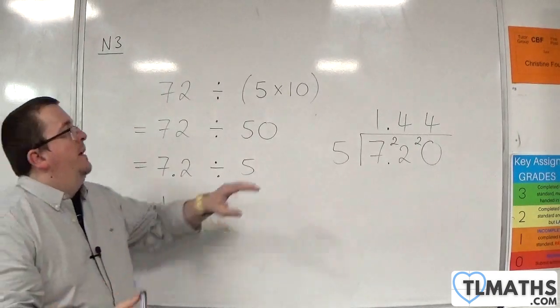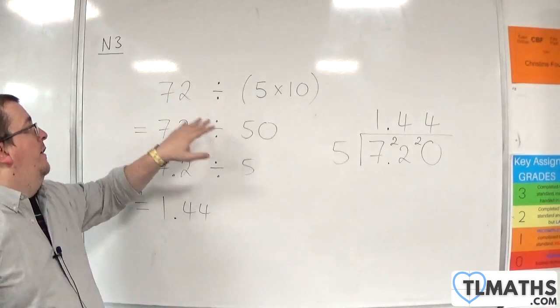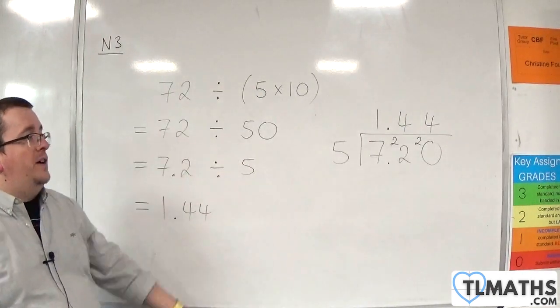So, the main lesson here is that the brackets told me I had to do the 5 times 10 first. Then, I could do 72 divided by 50.